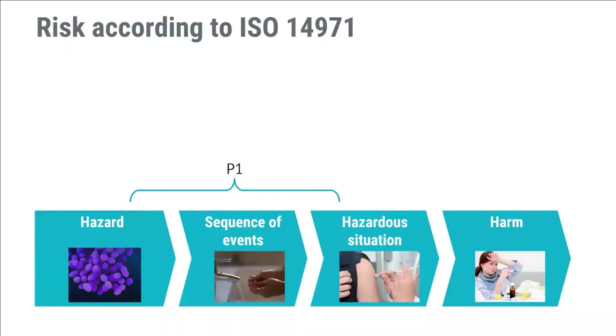Software generally cannot harm people directly. Software can take you to a hazard situation, but there needs to be something else acting to actually harm people. This is why software risk management is all about identifying how software can contribute to hazardous situations. I strongly recommend splitting PO into two components. The first part, usually called P1, is the likelihood of the hazard situation occurring as a result of the sequence of events.